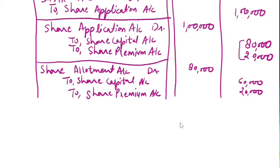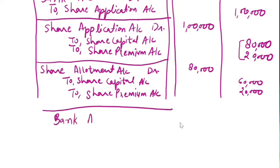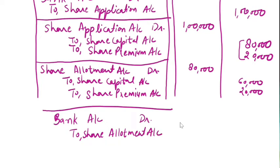We will now receive the share allotment money. All the money has been received — there is no call-in-advance scenario here. So: Bank Account debit to Share Allotment Account, rupees 80,000. Narration: Being share allotment money received.